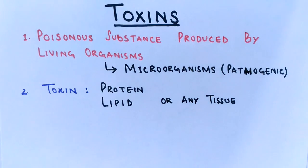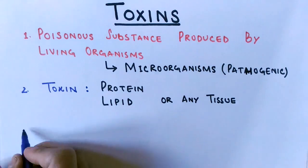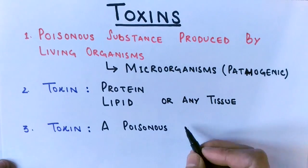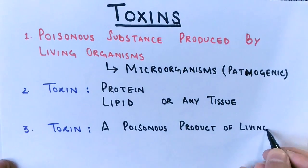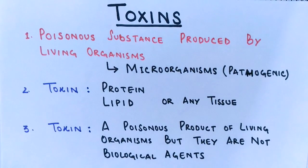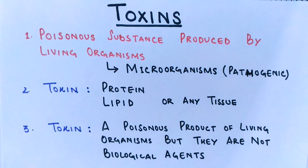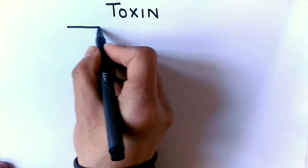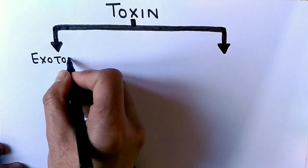Toxins are made up of proteins, lipids, or other molecules that can prove poisonous to the host. Importantly, although toxins are produced by living organisms, they are not biological agents themselves — meaning toxins are inanimate. A toxin is not a living substance, but it is produced by living organisms.